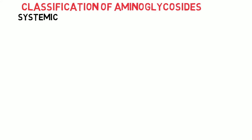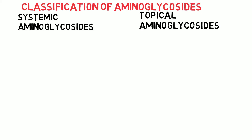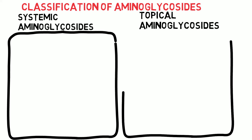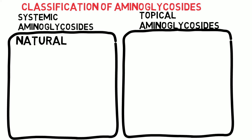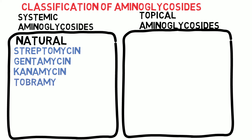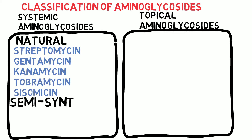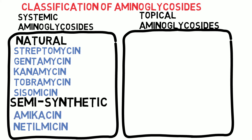Aminoglycosides can be classified as systemic and topical. Under systemic aminoglycosides, natural ones include streptomycin, gentamicin, kanamycin, tobramycin, and sisomycin. Semi-synthetic systemic aminoglycosides include amikacin and netilmicin. Topical aminoglycosides include neomycin and framycetin.